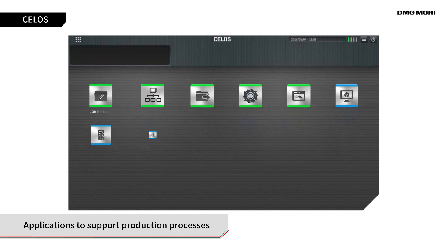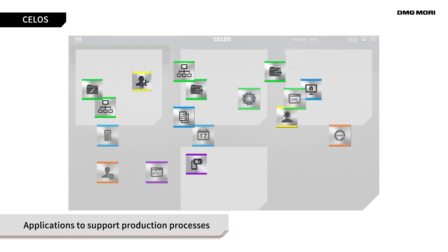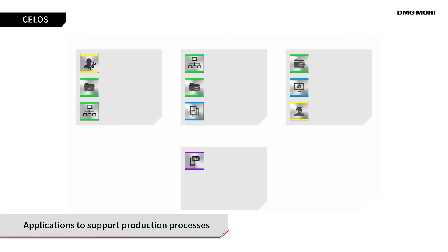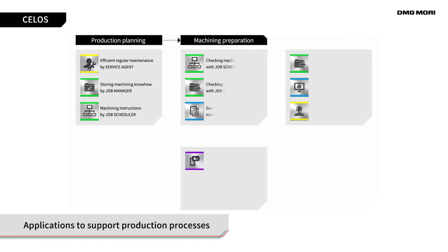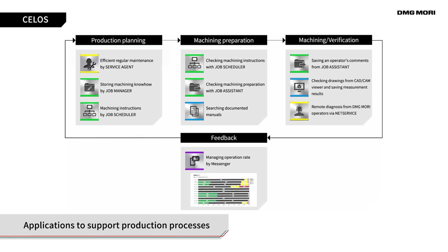Celos provides applications to support production processes. A production process consists of four phases: Production Planning, Machining Preparation, Machining Verification, and Feedback. Celos enhances each phase to improve productivity.